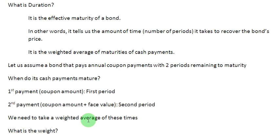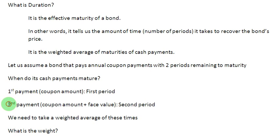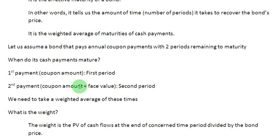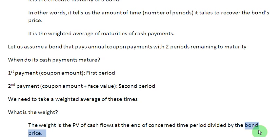So what we need to do is to take the weighted average of these times — time 1 and time 2. Since we are supposed to take a weighted average, we need to first establish what the weight is, and the weight is simply equal to the present value of the cash flows — the cash flow occurring at the end of the first period and the cash flow occurring at the end of the second period. We take the present value of both these cash flows and then divide these present values by the price of the bond B0, which if available to us directly we can use; otherwise, we can find out the price of the bond from the data available to us.